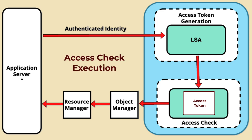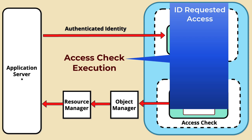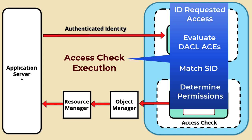Third, Access Check Execution: the SRM performs an access check by comparing the permissions in the ACL with the information in the subject's access token. This involves several steps. The SRM identifies the type of access being requested, such as read, write, or execute. It then evaluates each access control entry (ACE) in the ACL, where each ACE specifies the permissions granted or denied to a particular user or group. The SRM checks if the SID in the access token matches any SID in the ACEs. If a match is found, the SRM considers the permission specified in that ACE. The SRM then determines whether the requested access is allowed or denied based on the permission specified in the matching ACEs.